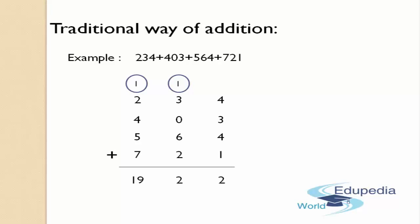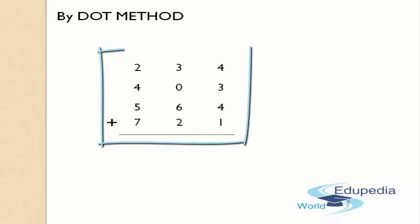Now let us see how we add numbers using the Bindhavankana Method in Vedic Mathematics. Let us take the same example. By using the Dot Method, before doing addition, the first main thing is to set the numbers in specific rows and columns as per their place values, just as we did before. After setting them, we start addition from the rightmost column, that is, from the ones place.